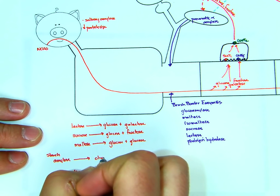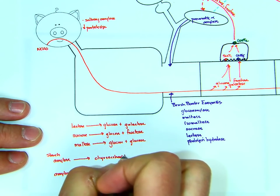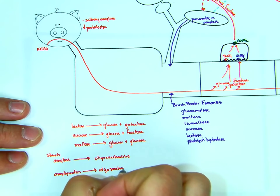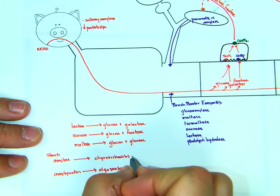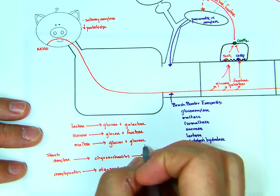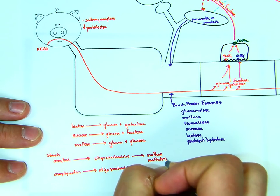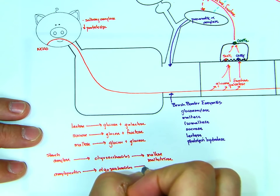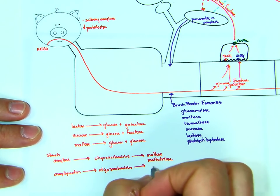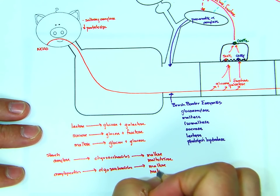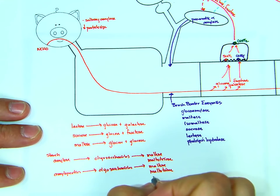So we're going to make oligosaccharides. And then from oligosaccharides with amylose, we get maltose and maltotriose. From the oligosaccharides in amylopectin, we get maltose and isomaltose.